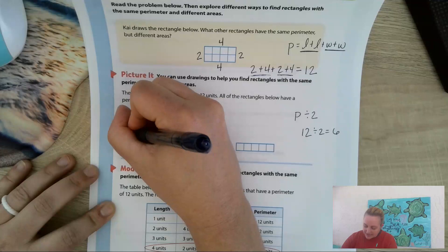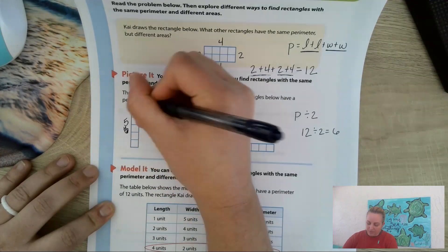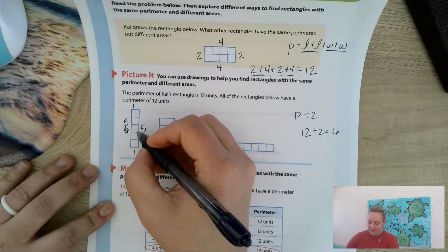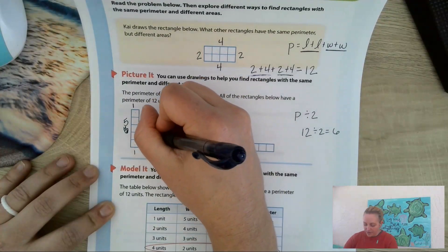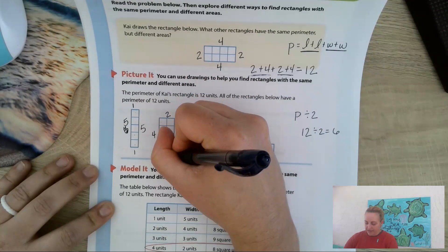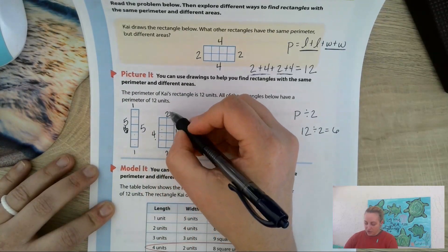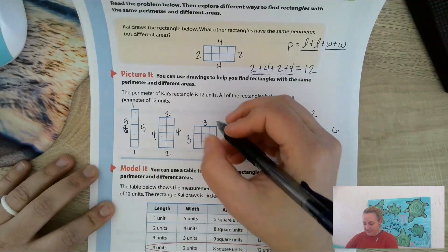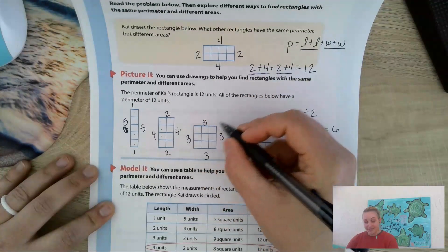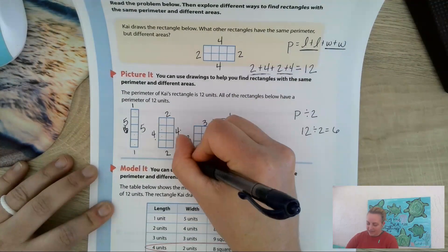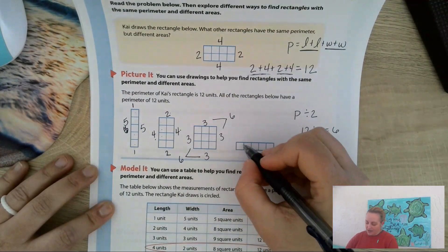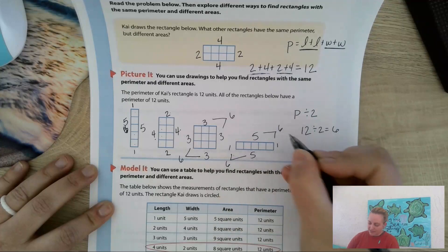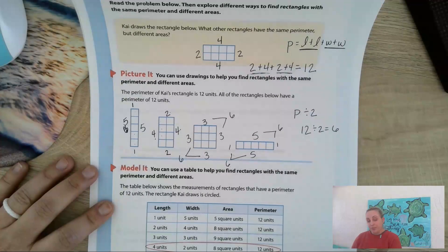What are ways I can add to get six? Here I have five plus one — five plus one is six, and six plus six is 12. Here I have four plus two — two plus four is six, and six plus six is 12. Here I have three plus three — three plus three is six, and six plus six is 12. And again, five plus one is six, six plus six is 12. So all of those have a perimeter of 12.